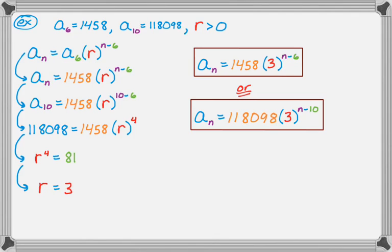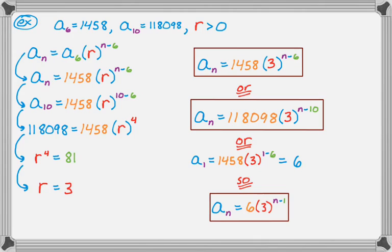It's not so typical to write it in terms of a sub 6 or a sub 10. It's way more common to write it in terms of a sub 1. So to do that, I'd need to find a sub 1. I'm going to use the first formula I wrote there, 1458 times 3 to the n minus 6, to find that. So a sub 1 should be 1458 times 3 to the 1 minus 6. And if you work that out, that's actually just 6. And now I know a sub 1 is 6, so I can rewrite my formula again and get a sub n is 6 times 3 to the n minus 1.